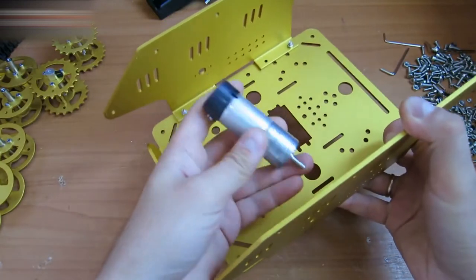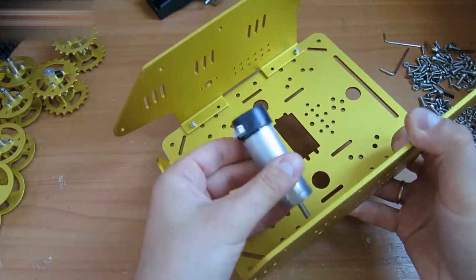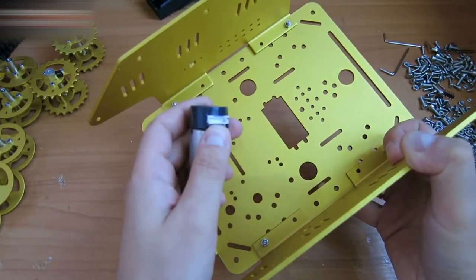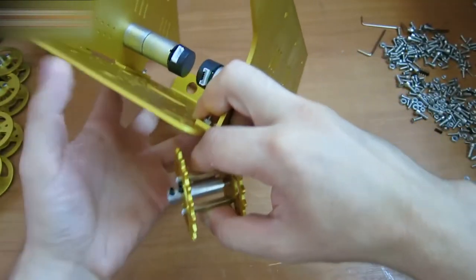Now let's attach the motor. We have two options. Either like this or like this. I think we should do it like this, with this part for the pin connector facing the back. Now let's attach these wheels.